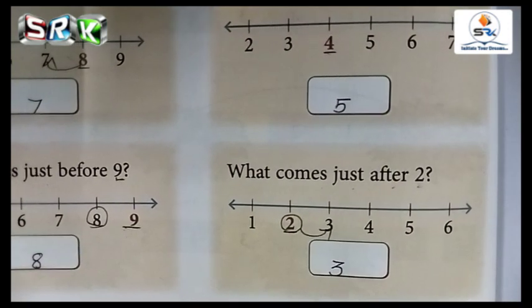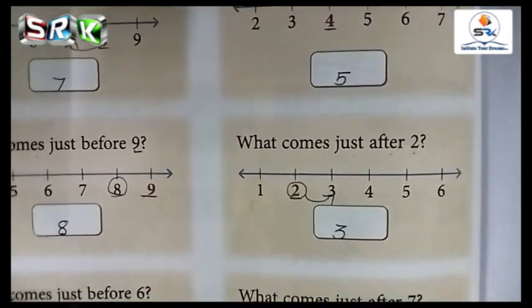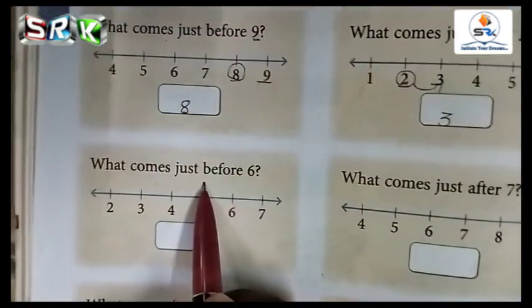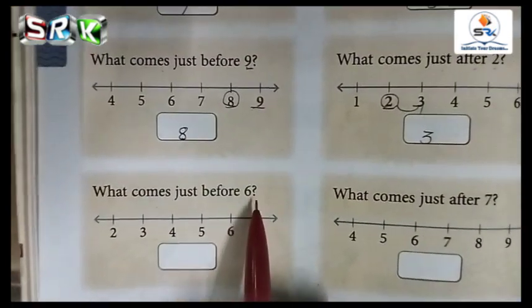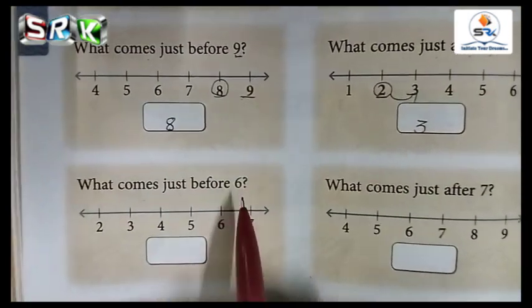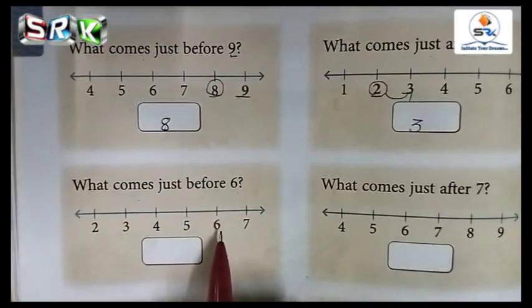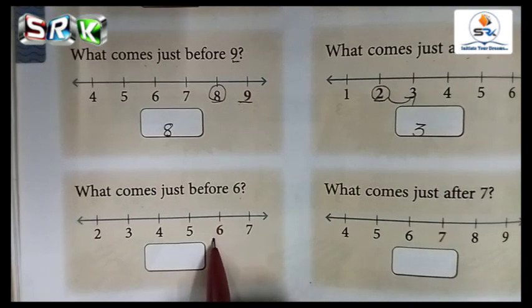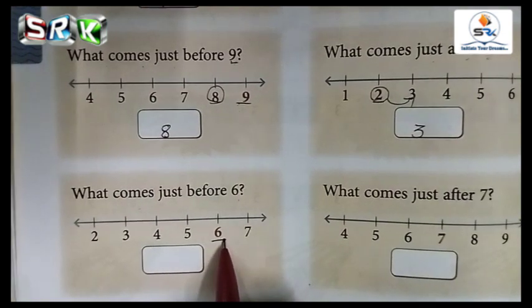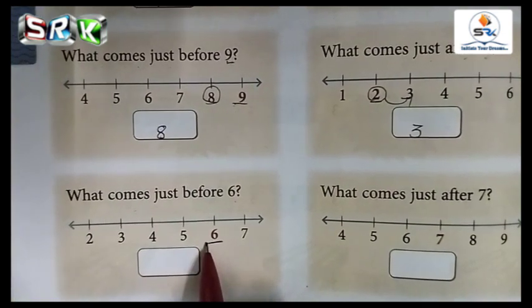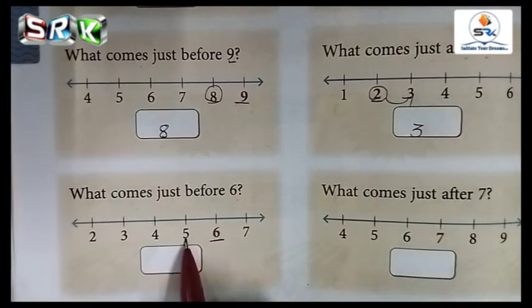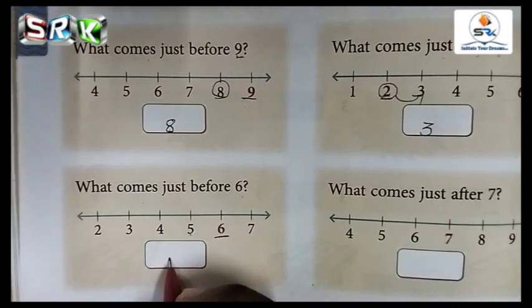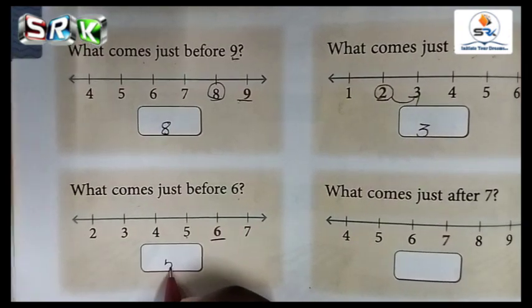See the next one: what comes just before 6? You have to count the number before 6. Six before number is 5. Write 5 neatly.